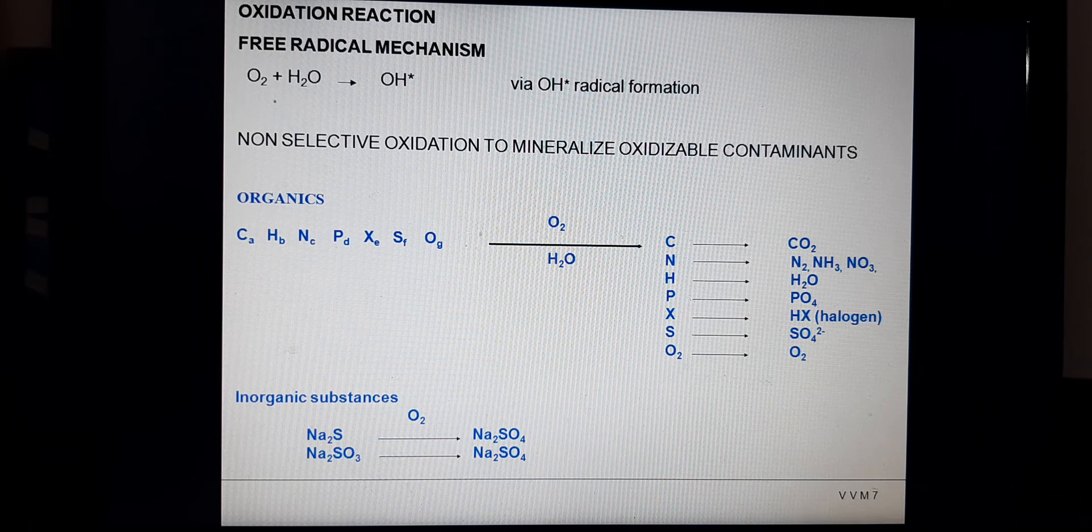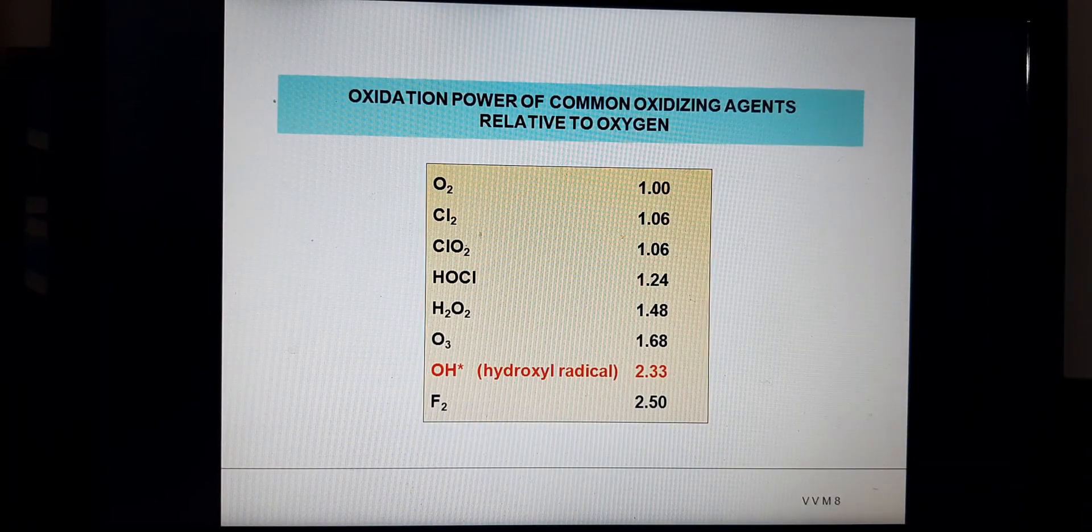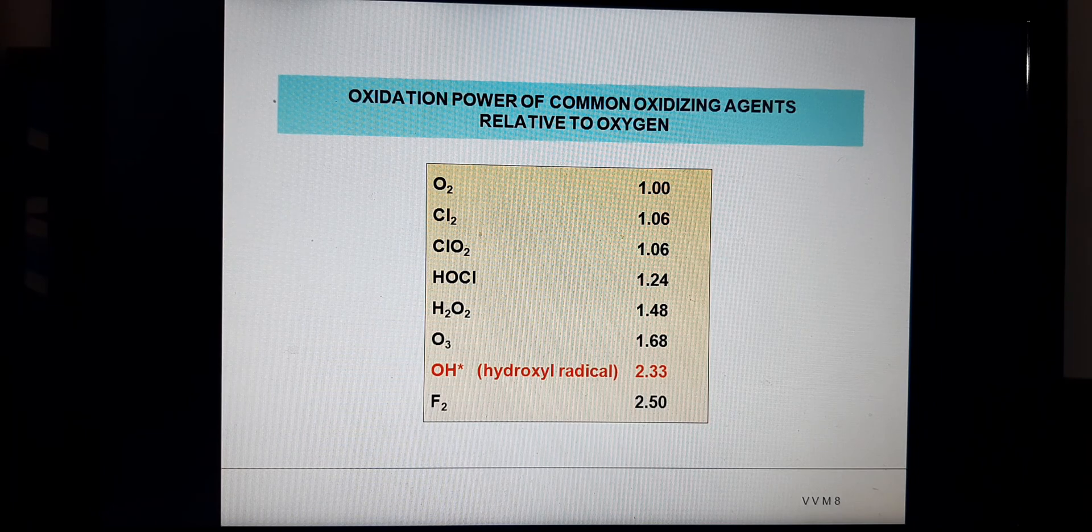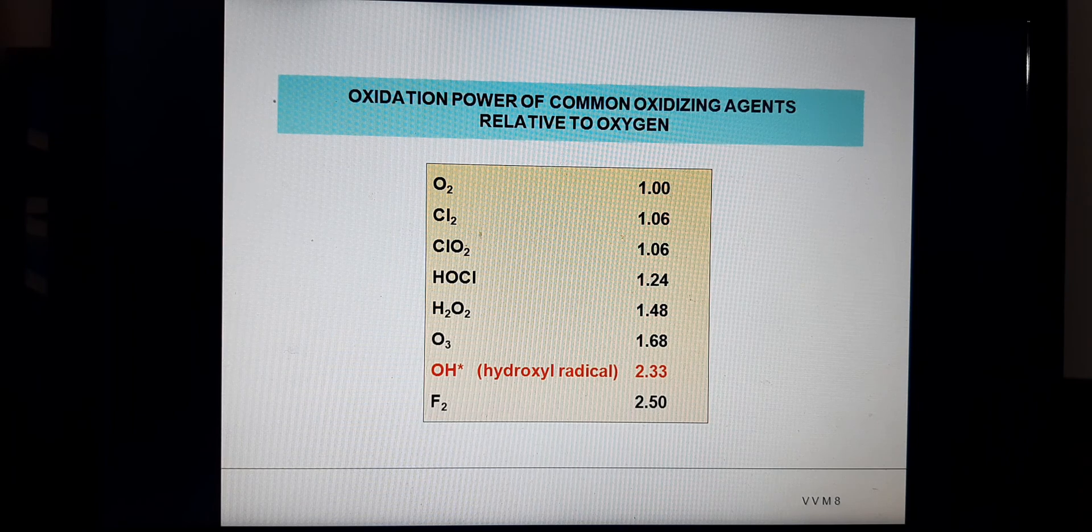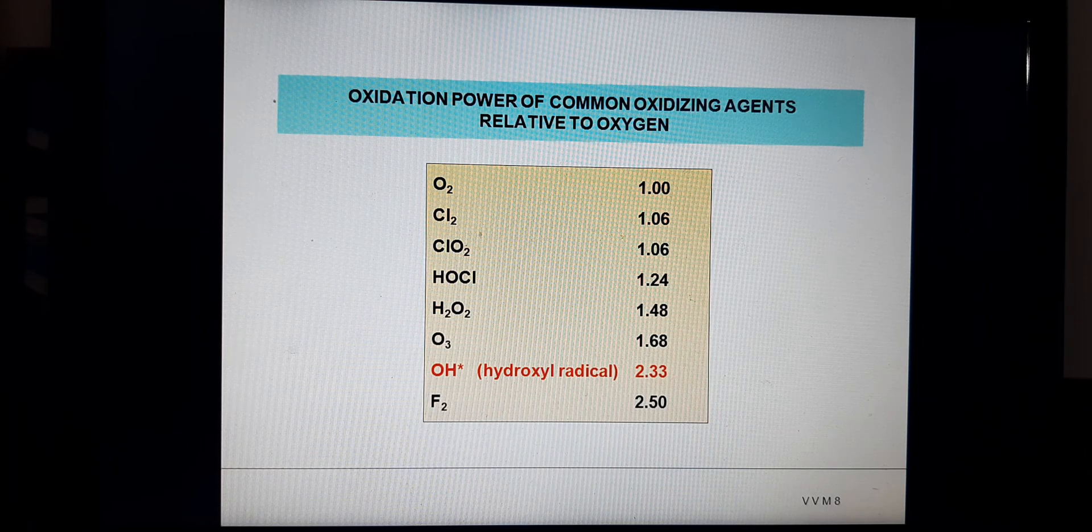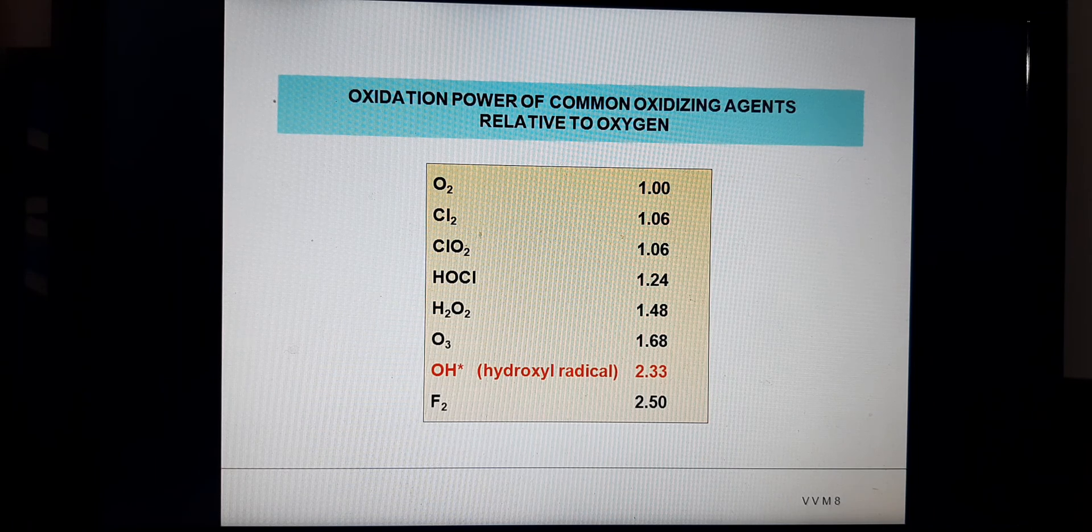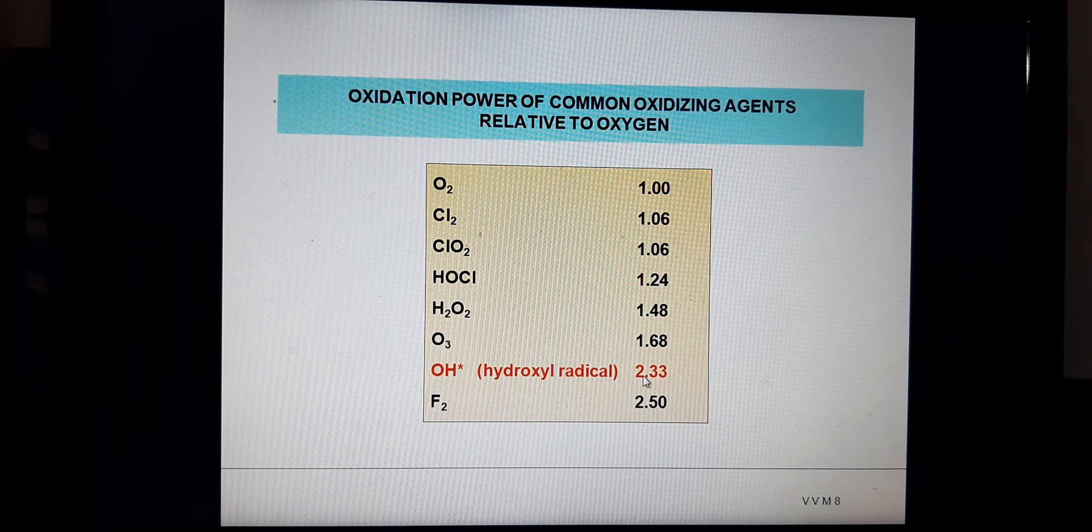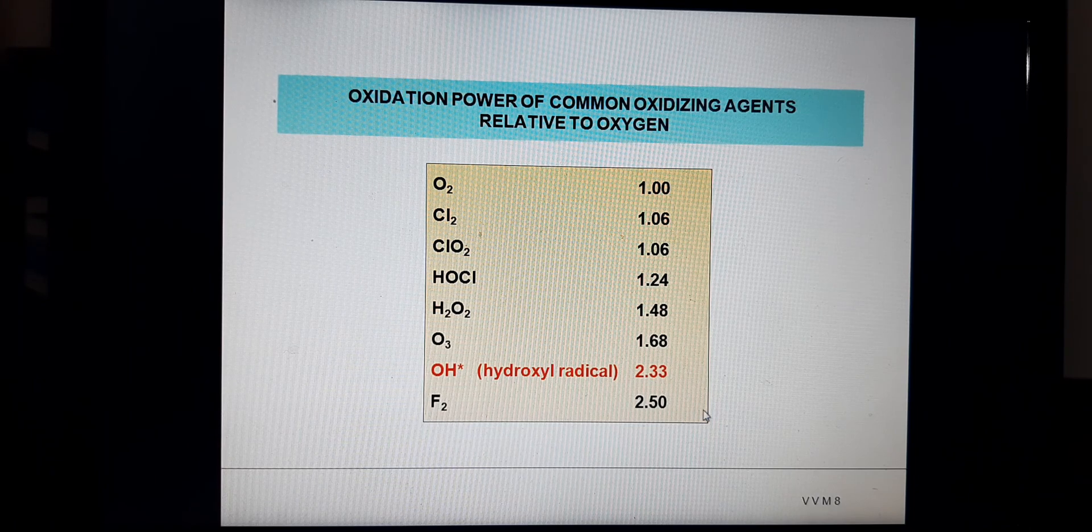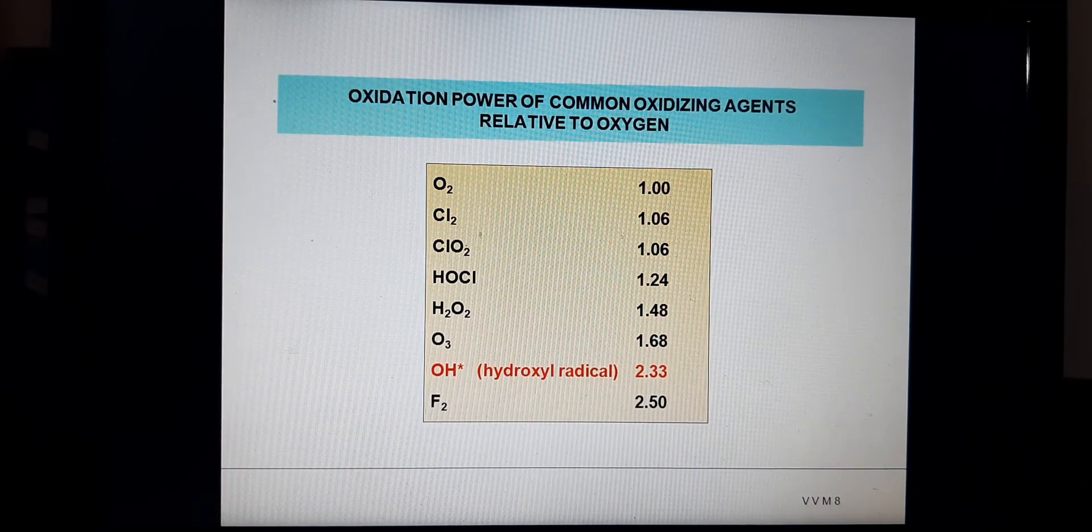Oxidation power of common oxidizing agents relative to oxygen: O2 is 1, Cl2 is 1.06, ClO2 is 1.06, hypochlorite is 1.24, hydrogen peroxide H2O2 is 1.48, ozone is 1.68, OH hydroxyl radical is 2.33, and F2 is 2.50.